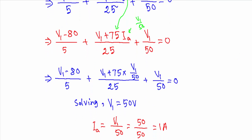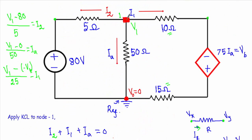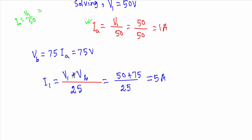Solving the equation gives V1 equal to 50 volts. Since Ia equals V1/50, Ia equals 50/50 equals 1 ampere. From Ia, Vb equals 75 times 1 equals 75 volts. Then I1 equals (V1 plus Vb)/25 equals (50 plus 75)/25 equals 125/25 equals 5 amperes. With Ia and I1 calculated, the circuit analysis for Example 1 is complete.